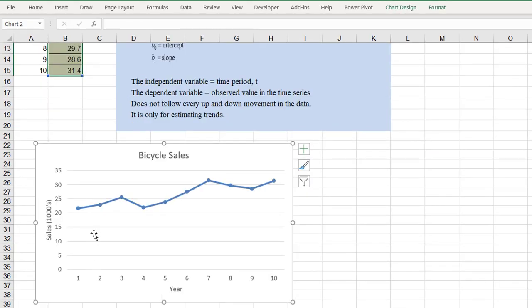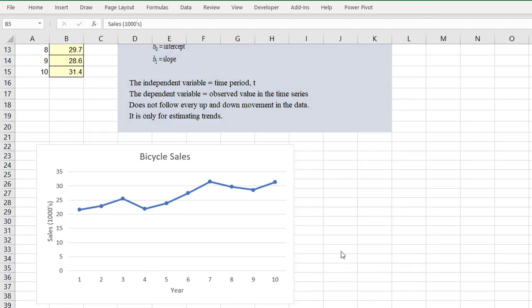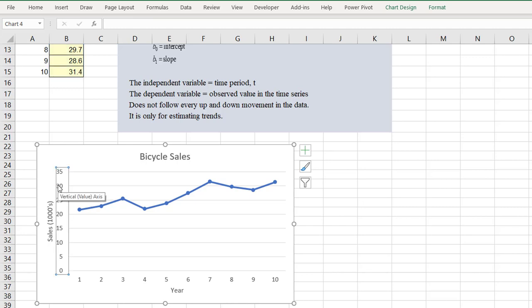Now there is all this blank space here below the line, so we may want to let the vertical axis start around 15 instead of at 0. You can do that by going to the Format Axis dialog box. We click on one of these numbers on the vertical axis, then double click.